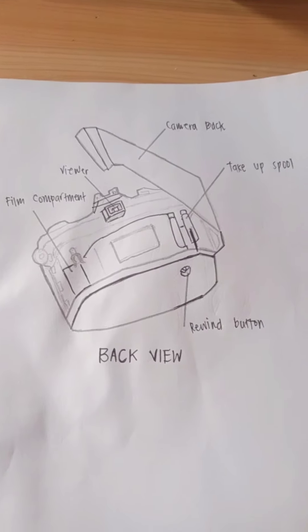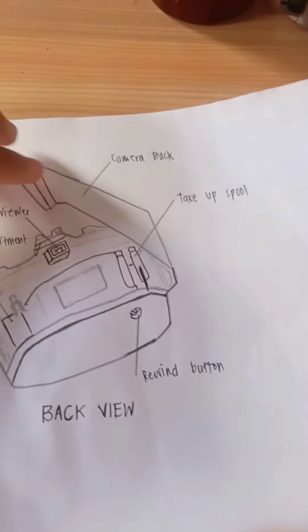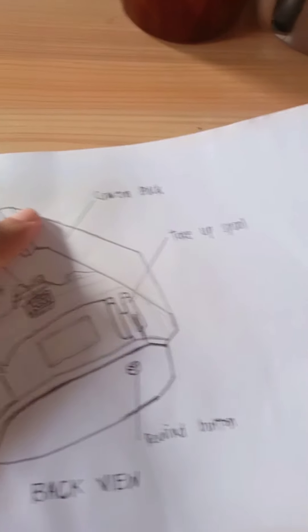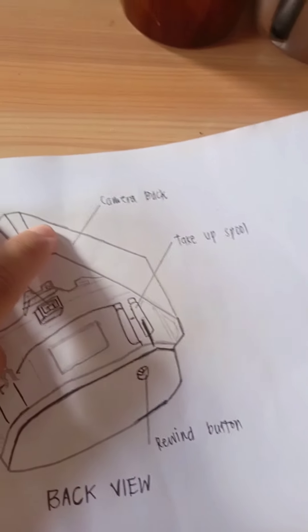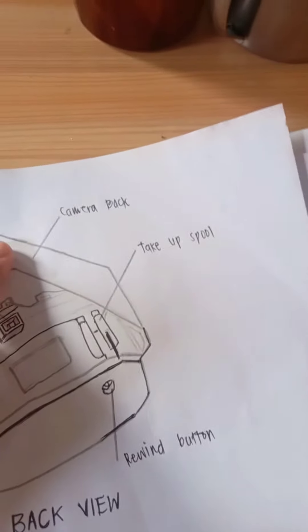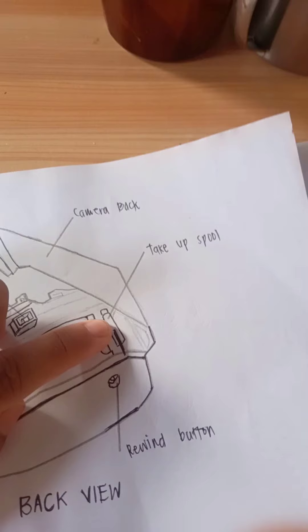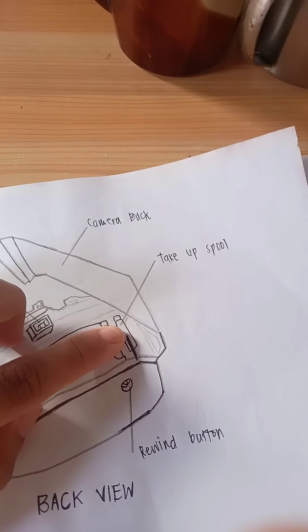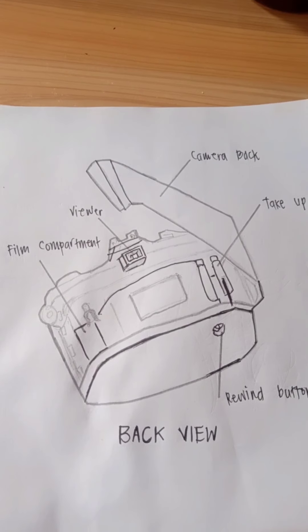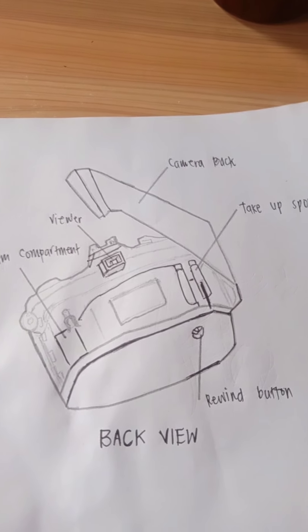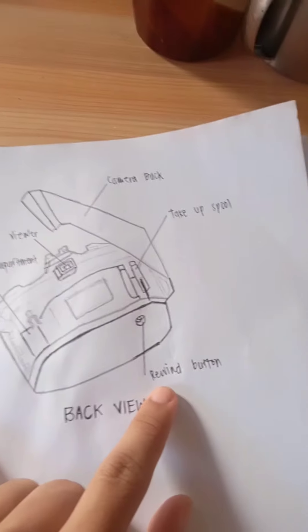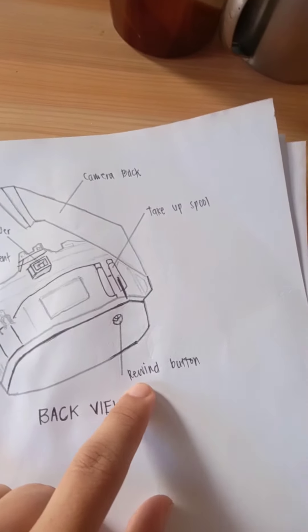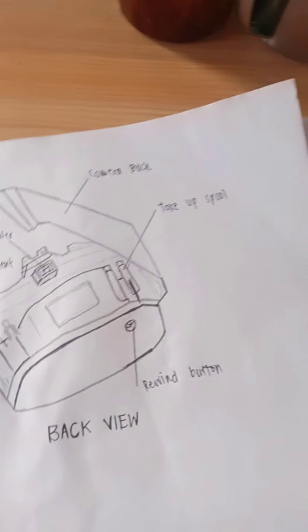Analog back view. Camera back, a camera that attaches to the back of the device. Take up spool, an empty spool that picks up the film in the camera. Rewind button, a type of button to make a tape in a cassette play backward.